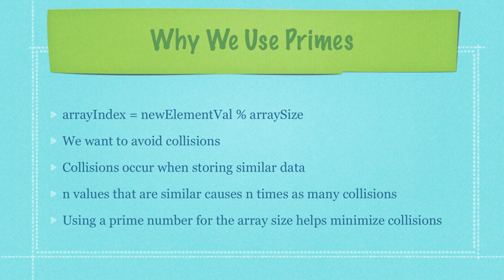So why should we use primes? Previously, to calculate what index we're going to put our values in, we just used the value modulus an arbitrary array size. You'll see in this tutorial why it's better for the array size to be a prime number. The main thing we want to do is avoid collisions — a collision occurs whenever we try to put an item in an index that already has an item inside of it. Collisions mainly occur when storing similar data, and if we have n similar values, this causes n times as many collisions.